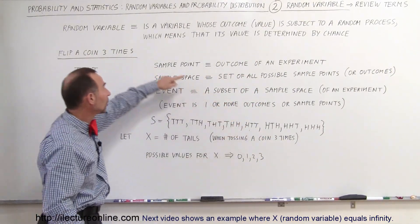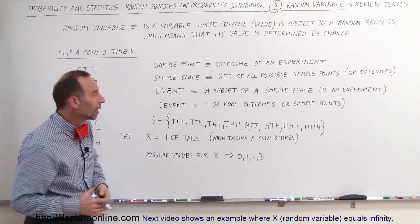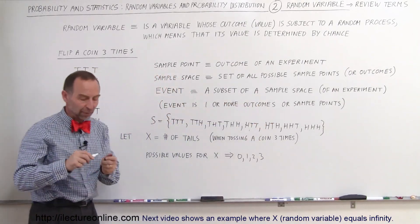Any one of these is what we call a sample point or also the outcome of an experiment. An event is a subset of a sample space.